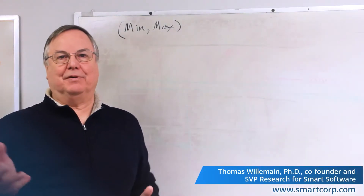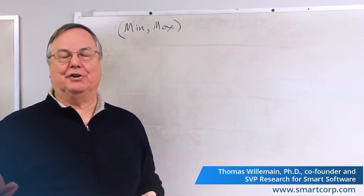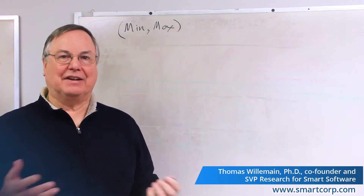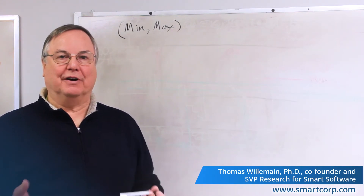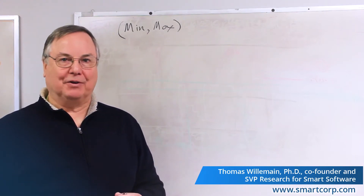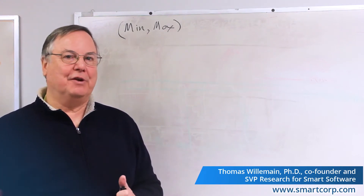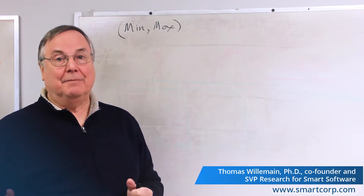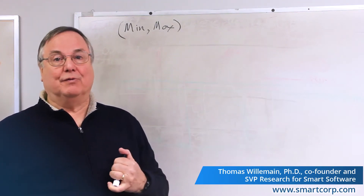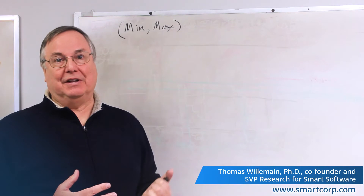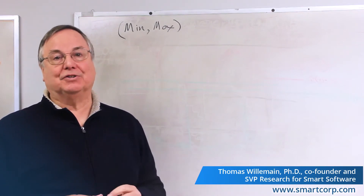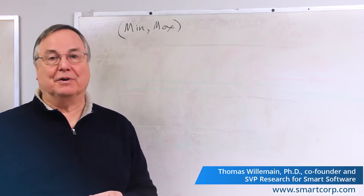We'll finish up and show the third of the three inventory policies that are reactive to where your on-hand inventory is. This is called the min-max policy. It has theoretical advantages over the other two because it's more adaptive and more agile. It's a very common policy and a smart thing to do if you can pull it off.